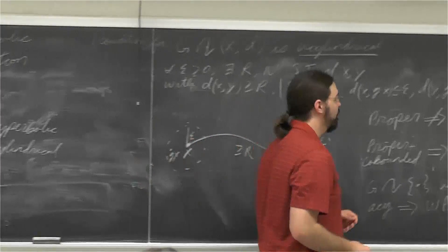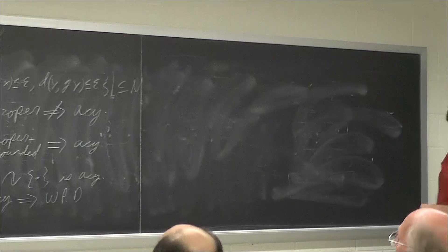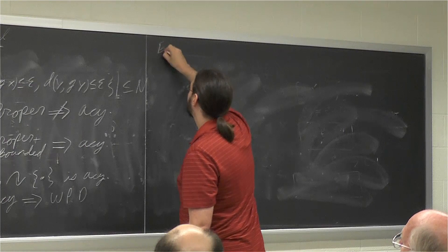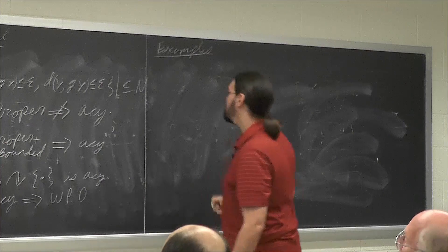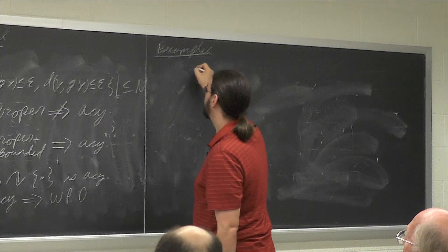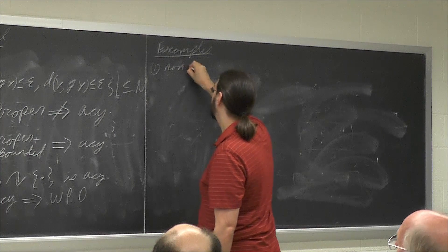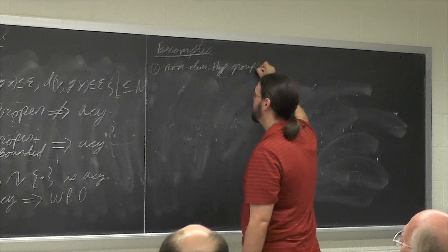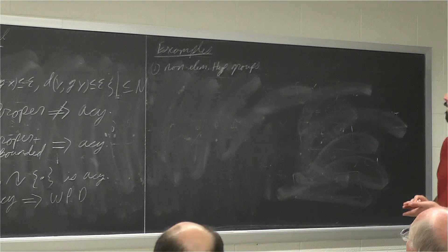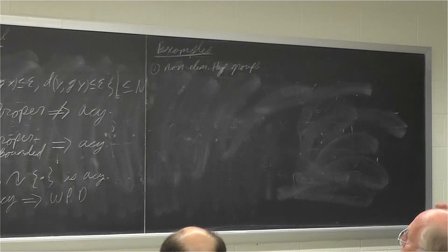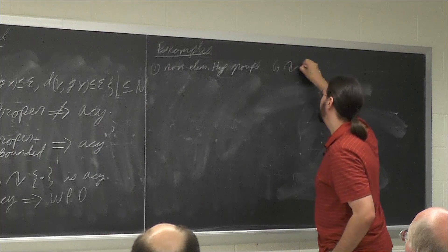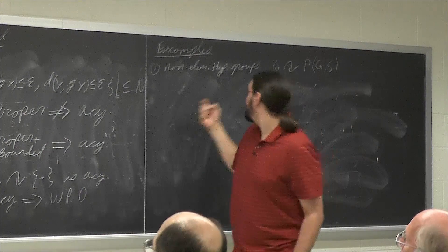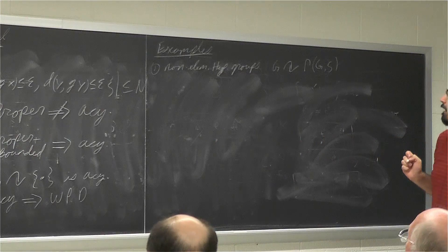Are there any interesting groups that admit such actions? The first example is non-elementary hyperbolic groups, defined by Gromov in the 80s and a central part of geometric group theory ever since. If you have such a group G, its Cayley graph with a finite generating set is hyperbolic. This action is proper and co-bounded, so it's an acylindrical action on a hyperbolic metric space.